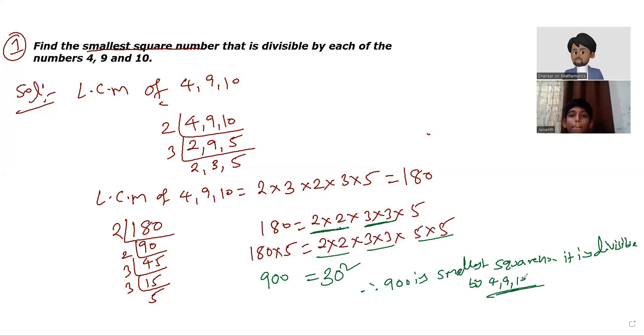Even you can ask me, sir, 180 also divisible. Now suppose you can ask me, sir, we got LCM now, 180 also divisible. But 180 is divisible, but the thing is they asked in the question smallest square number. That's why we are going this method. And I hope you understood, Jayvan. Yes sir, okay, thank you.